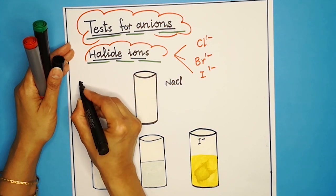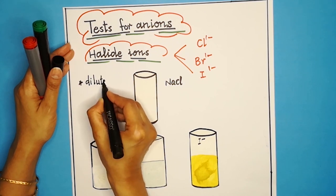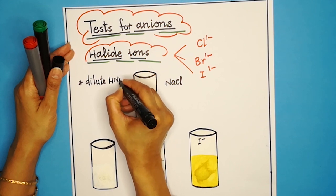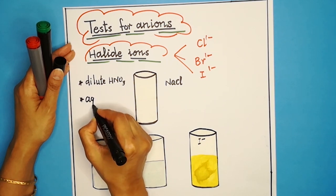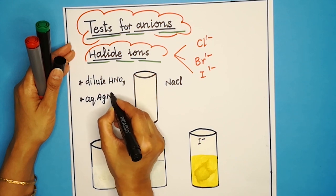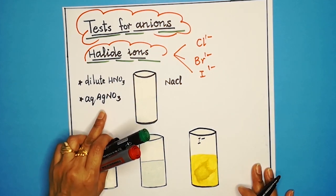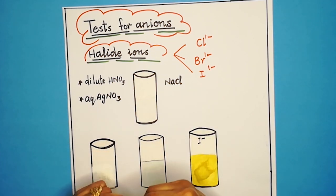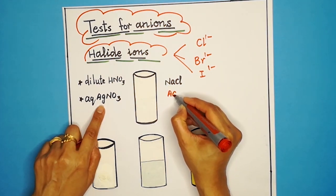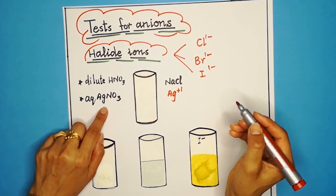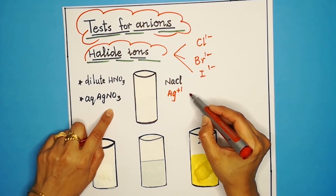To the unknown solution, we will add dilute nitric acid, followed by aqueous silver nitrate. We use aqueous silver nitrate because in its aqueous form it contains silver ions. This silver ion can then attach with the halide ions present in the solution.